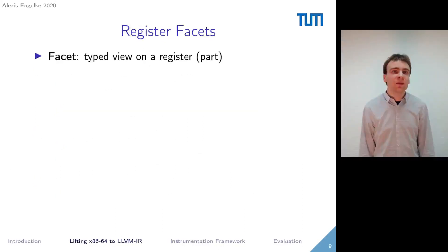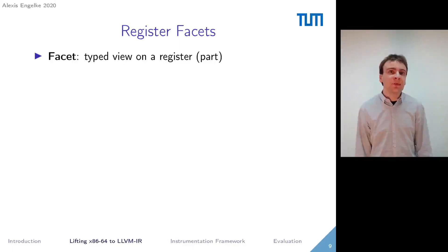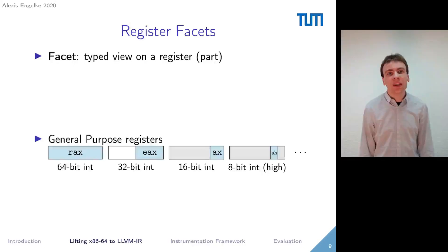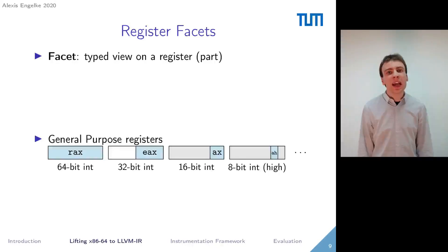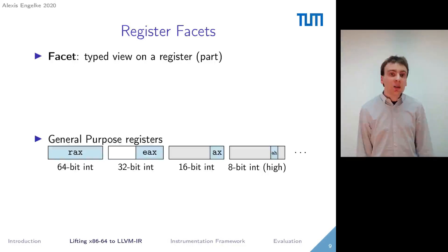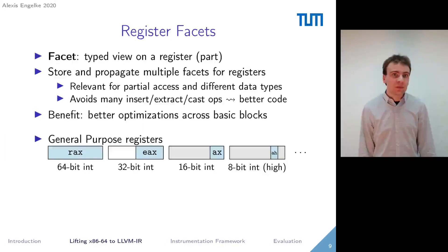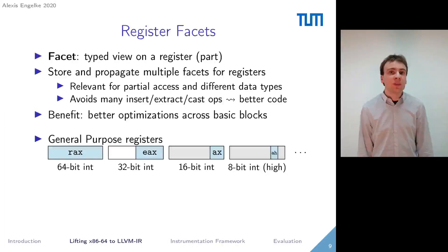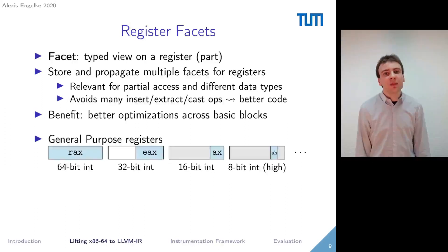The key concept of our lifter, which distinguishes it from other lifters, is the concept of facets. A facet is a typed view on a register or part of a register. For example, consider the x86 register RAX, which can be accessed as a 32-bit integer in EAX, or a 16-bit integer in AX. In our lifter, we store multiple facets for registers, which avoids many insert and extract operations — leading to less code, but also to better and more idiomatic code that can be better optimized by LLVM's optimization passes, leading to better code even in complex control flows.